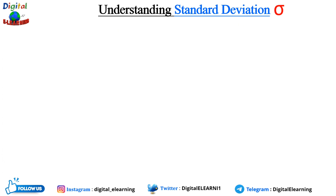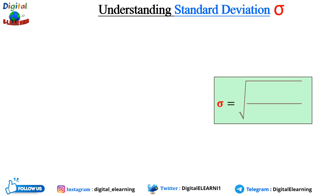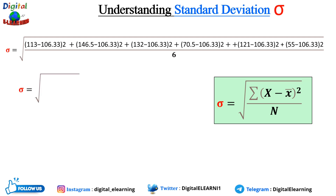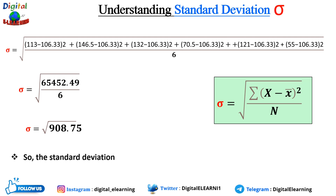Now let's apply the formula, assuming it is for population. We put all the calculated values into the formula, which comes to: the square root of (1654 + 452 + 49) divided by 6, equaling 908.75 under the square root. The standard deviation for this data comes out to approximately 30.14. That is how you calculate the standard deviation for a population.